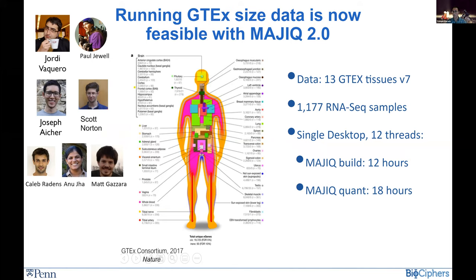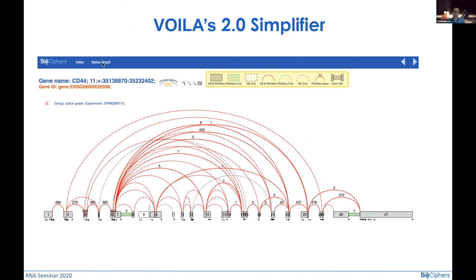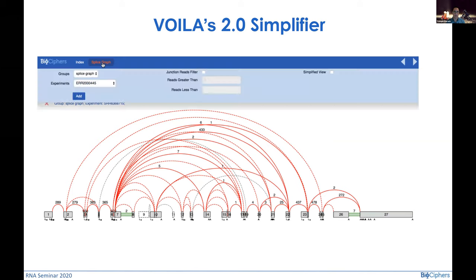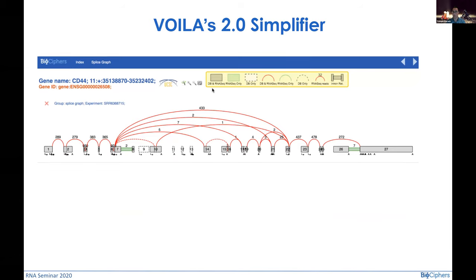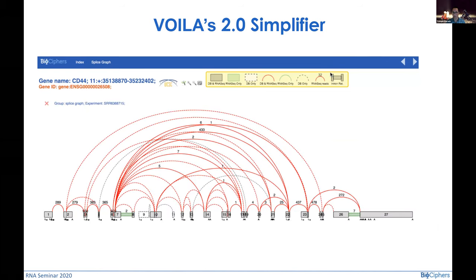A major issue when processing such large datasets is what we call the 'water fountain effect' — you see a lot of junctions shown as dashed lines because they don't actually appear in specific samples, or have very low coverage. You can clear them with MAJIQ during processing by removing lowly included ones, but you can also clean them in the visualization. If you click to simplify based on thresholds, you get the same gene, much, much simplified, so you can focus on the major splicing variations.